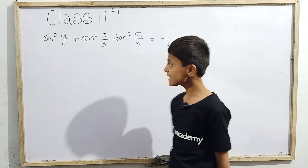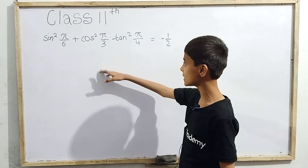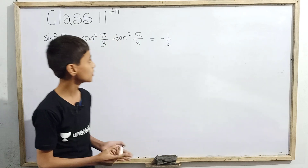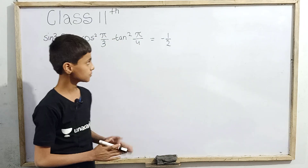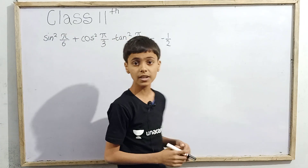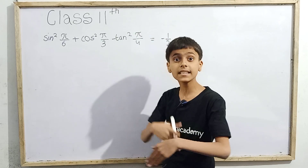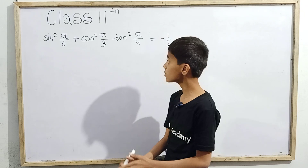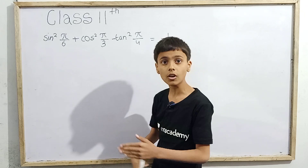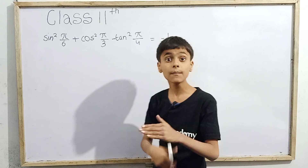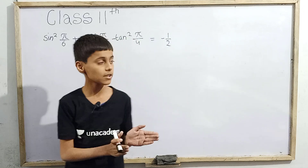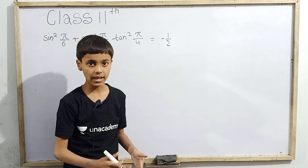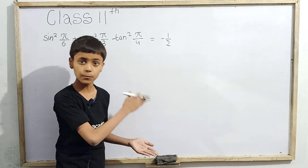The question is: sin²(π/6) + cos²(π/3) - tan²(π/4) = -1/2. We are asked to prove this. So we remove π/6 sine square, add π/3 cos square, and subtract π/4 tan square, and our answer should be -1/2. We have to prove this equation.